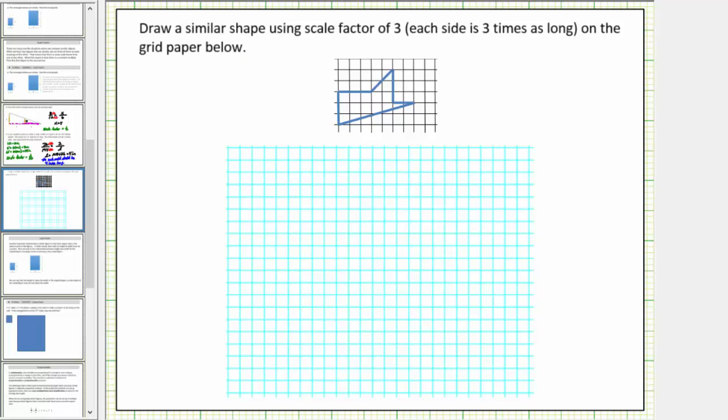We are asked to draw a similar shape using a scale factor of three on the grid paper below. So this is the original shape, original figure. Because we're using a scale factor of three to sketch the new similar shape, this means all the sides will be three times as long as the lengths of the sides in this figure.